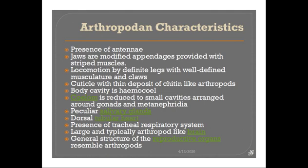The presence of a tracheal respiratory system is the next character. We have learned that an unbranched tracheal system is present in Peripatus for respiration. Similarly, in Arthropoda the tracheal system opens outside through regularly arranged spiracles, but in Peripatus there is no regular arrangement of spiracles — that is the only difference. Ultimately, a tracheal respiratory system is present in both Arthropoda and Peripatus.